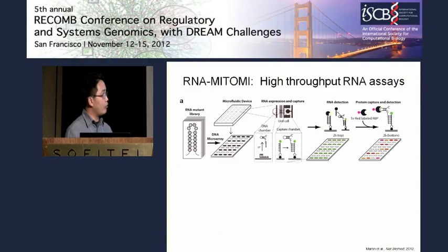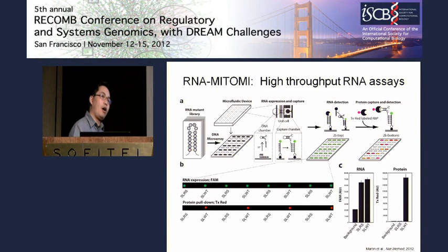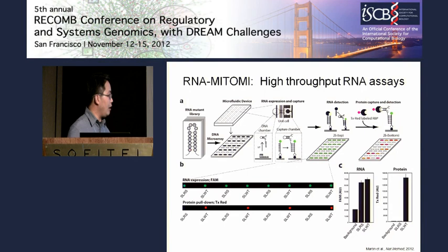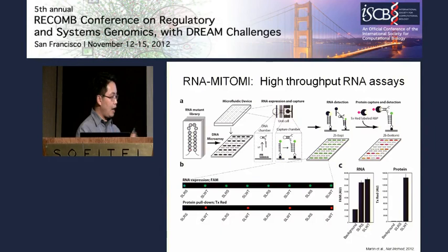Onto this RNA array we can flow a fluorescent protein of interest, capture it, and interrogate the amount of binding. The first test case is the histone mRNA 3' stem-loop and its stem-loop binding protein. From each well, we've made this RNA at equal levels, but only the wild-type RNA binds the protein — the mutant does not. The quantitation shows a dynamic range of something like 5 logs, so highly high signal-to-noise and very quantitative.